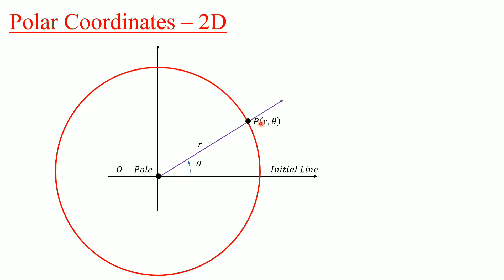The coordinates of point P are R and theta. R tells us that point P lies at a distance R from the pole, and theta tells us that it lies on a vector whose angle with the positive x-axis is theta, passing through the pole. This is how we give polar coordinates.